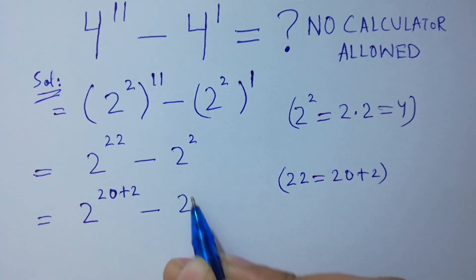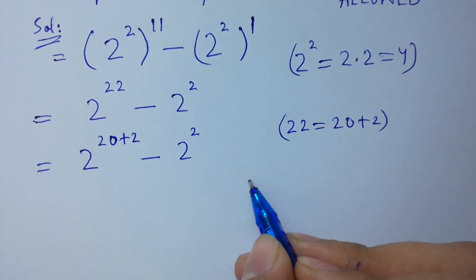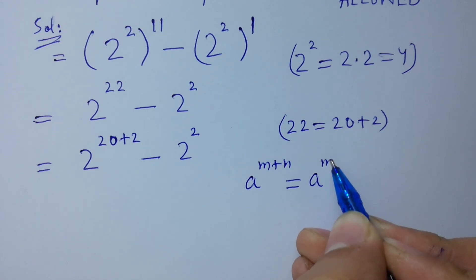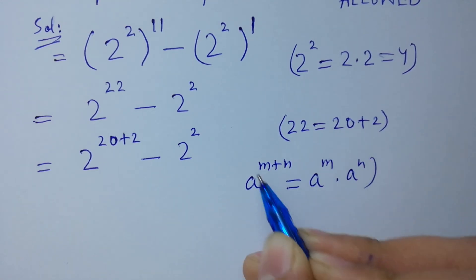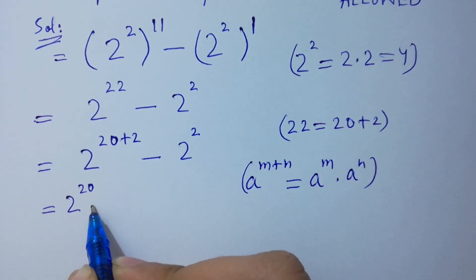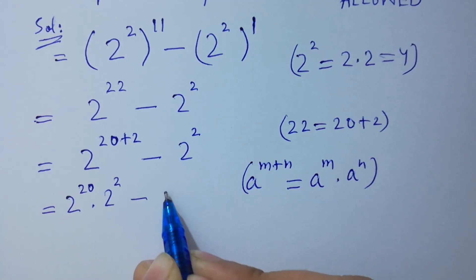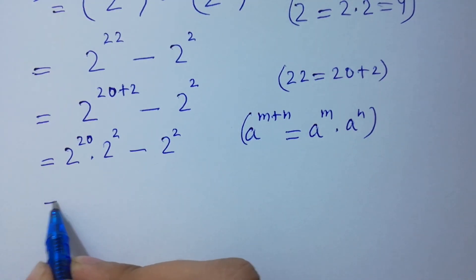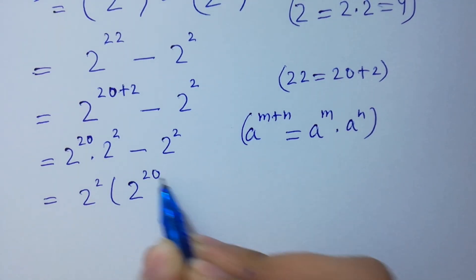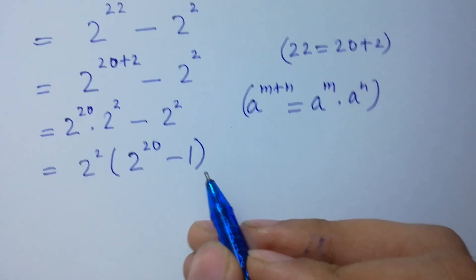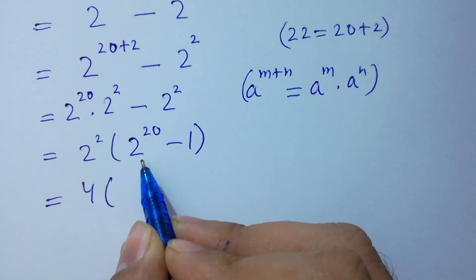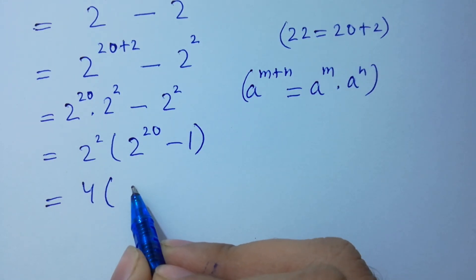Since a to the power (m plus n) equals a to the power m times a to the power n, we get 2 to the power 20 times 2 to the power 2, minus 2 squared. We can factor out 2 squared, giving us 2 squared times (2 to the power 20 minus 1).